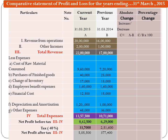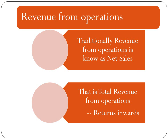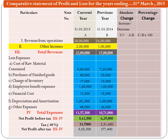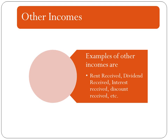Let us explain each item of Statement of Profit and Loss in a little more detail. The first item is Revenue from Operations, traditionally known as Net Sales — that is Total Revenue from Operations minus Return Inwards. The second item is Other Incomes, which include incomes other than Revenue from Operations: Rent Received, Dividend Received, Interest Received, Discount Received, or any other income such as profit on sale of an asset.